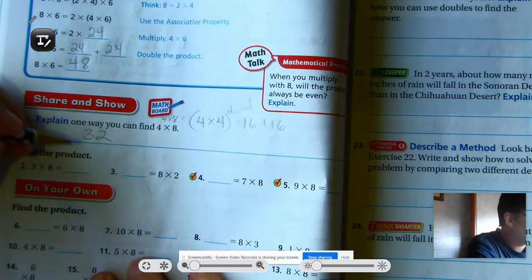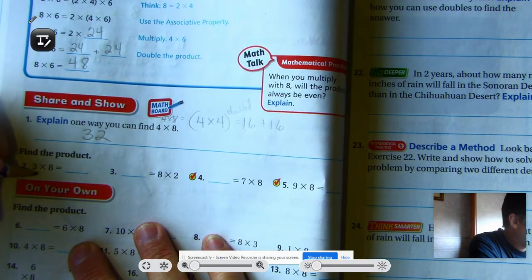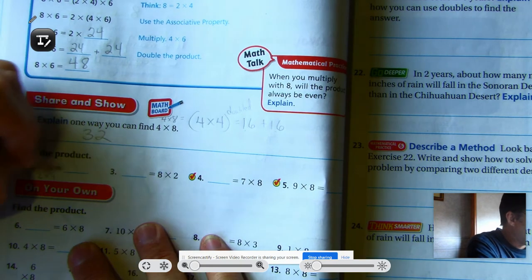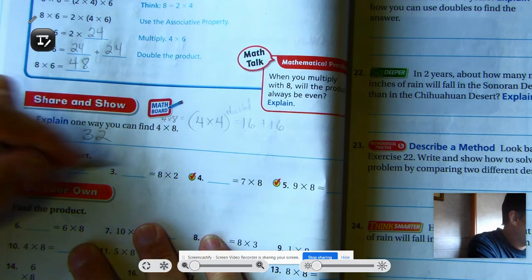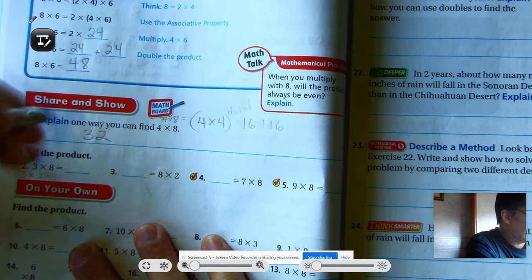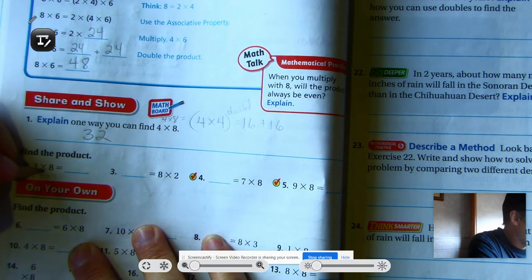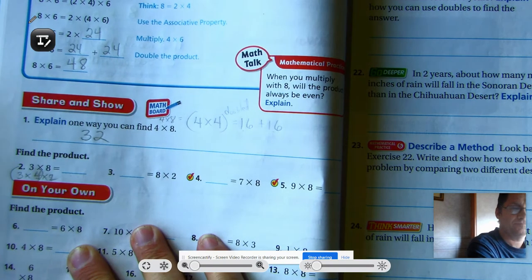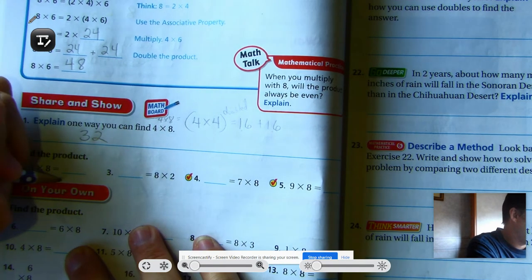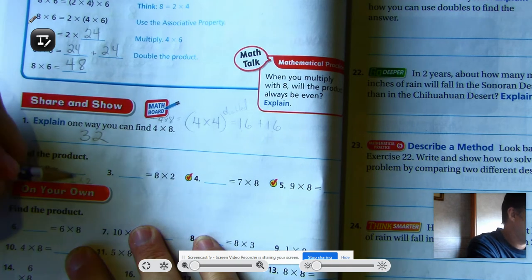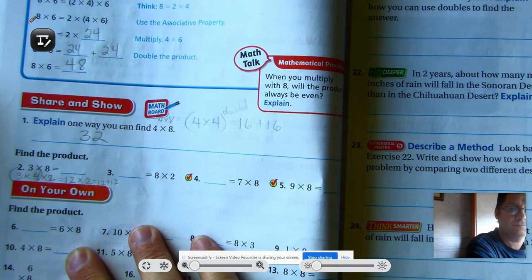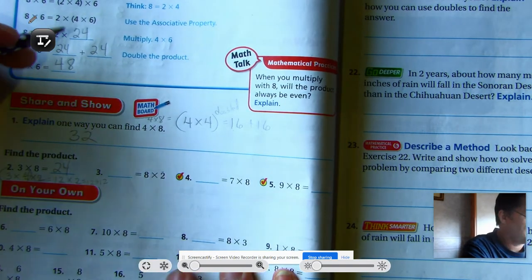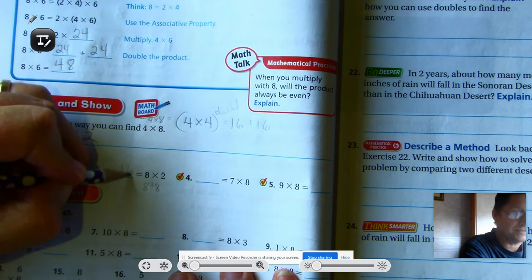Okay, three times eight. So I could say three times two times four. And I'm going to actually switch this. So I'm going to say three times four times two. And I'm going to group the three and the four together. And it gives me 12. And 12 times two is the same as 12 plus 12, which is 24. Eight times two. I'm just going to say eight plus eight. Well, that's 16.